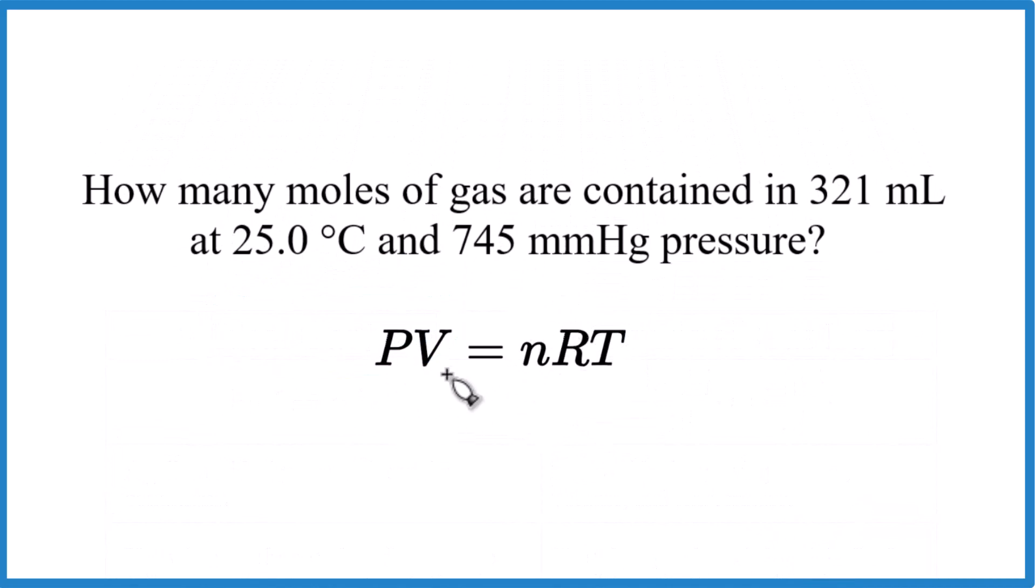So, we have PV equals nRT. We have pressure right here in millimeters of mercury, then we have a volume, 321 milliliters. We're looking for moles. R, that's our constant in temperature, that's in Kelvin.